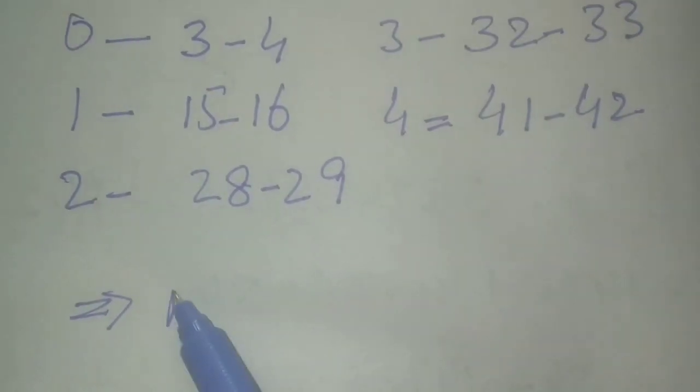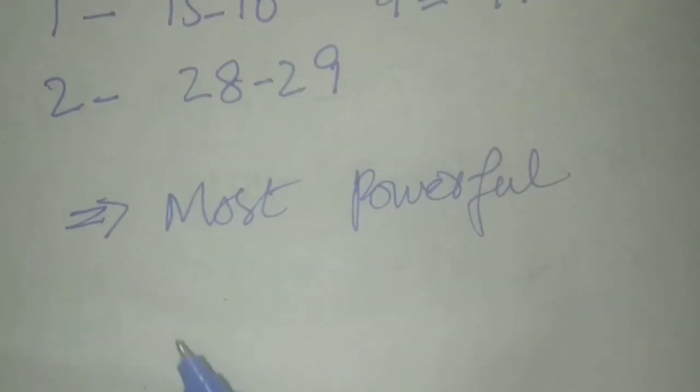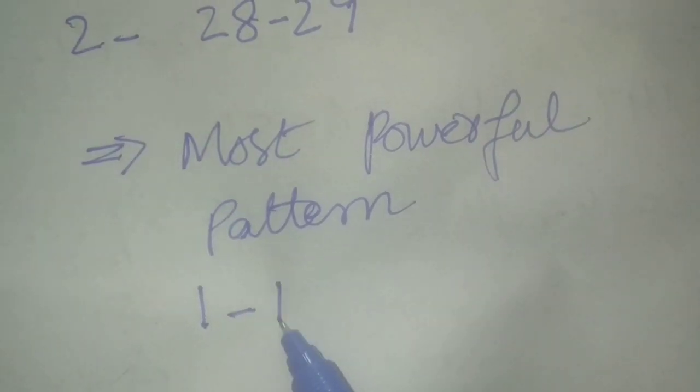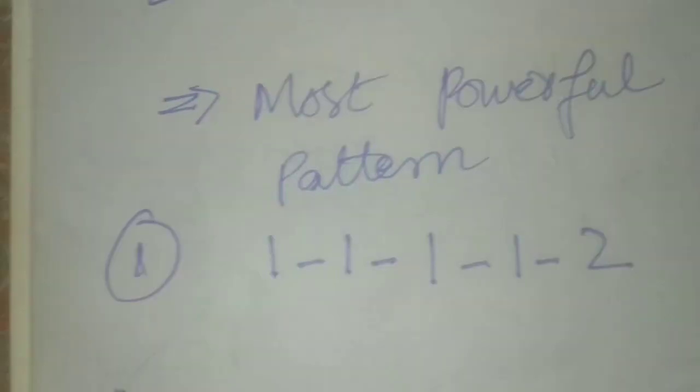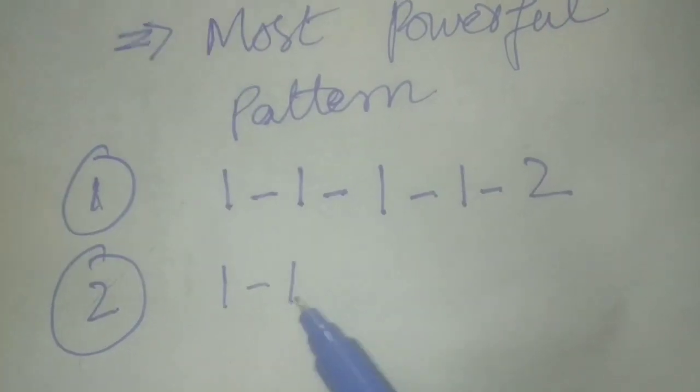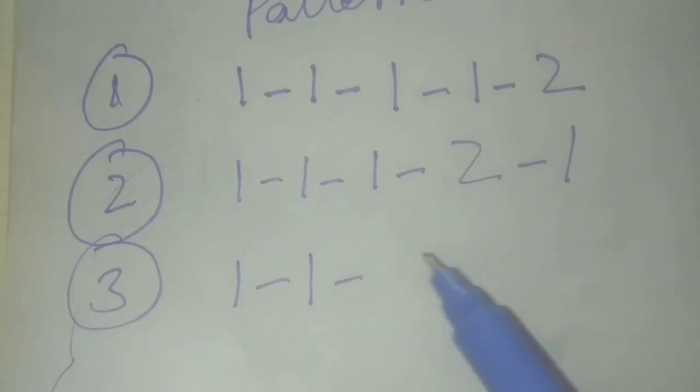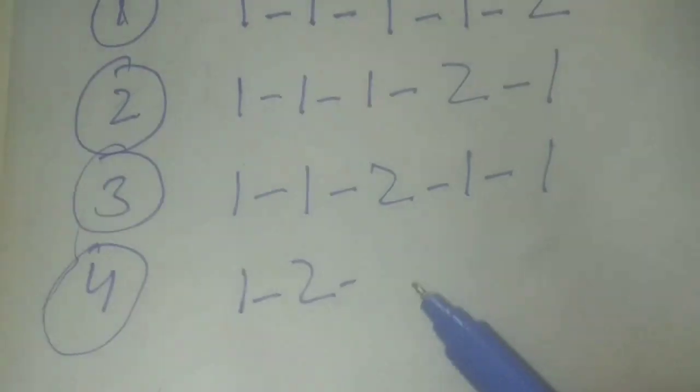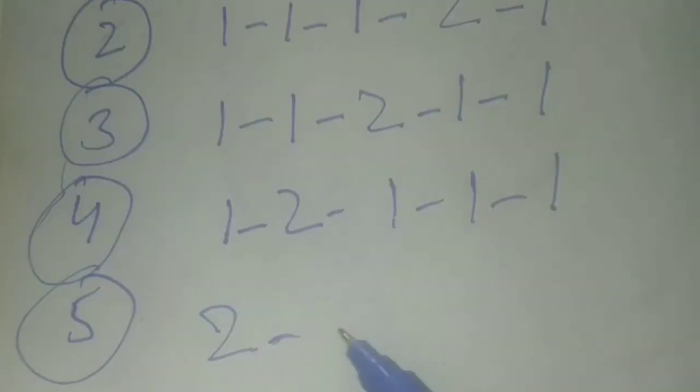Most powerful pattern for this draw you should select at the time of selection according to this pattern: Number 1 is 1-1-1-1-2, Number 2 is 1-1-1-2-1, Number 3 is 1-1-2-1-1, Number 4 is 1-2-1-1-1, Number 5 is 2-1-1-1-1.